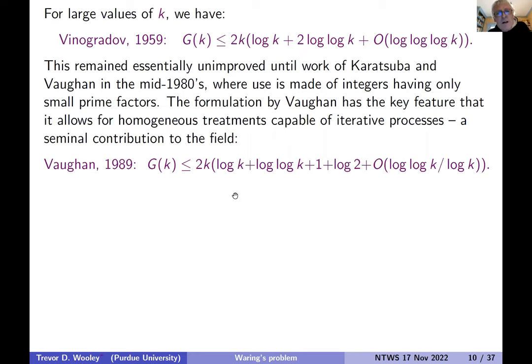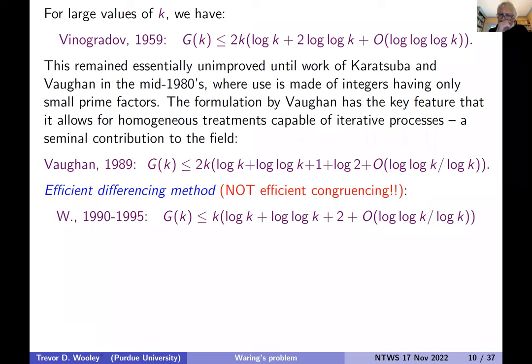So Vaughan, as you can see, improved on Vinogradov's bound. You have to look to see where the improvement is maybe, but it's in this log log k term. So one of the log log k's disappears. And we have some explicit control here as well.